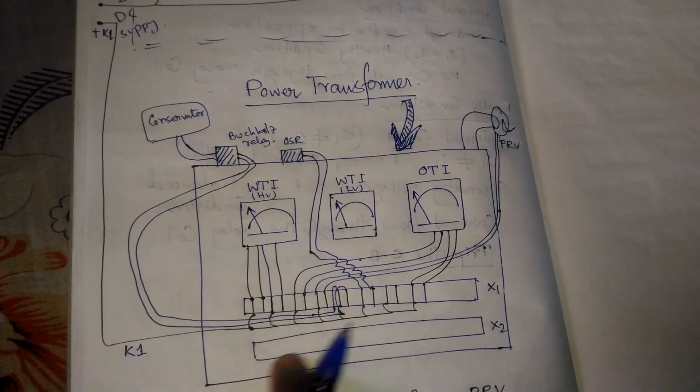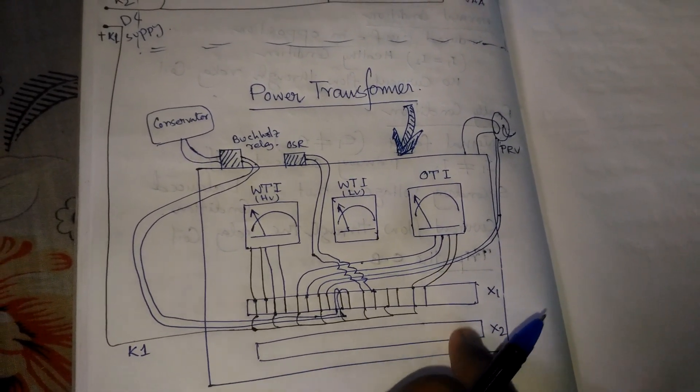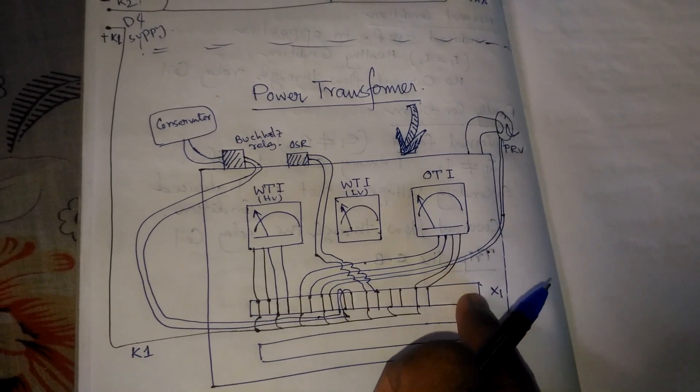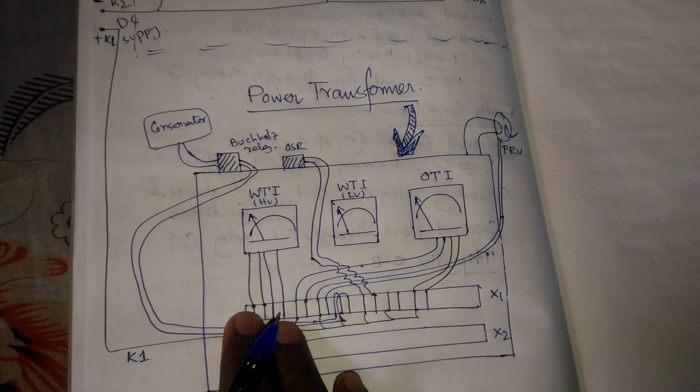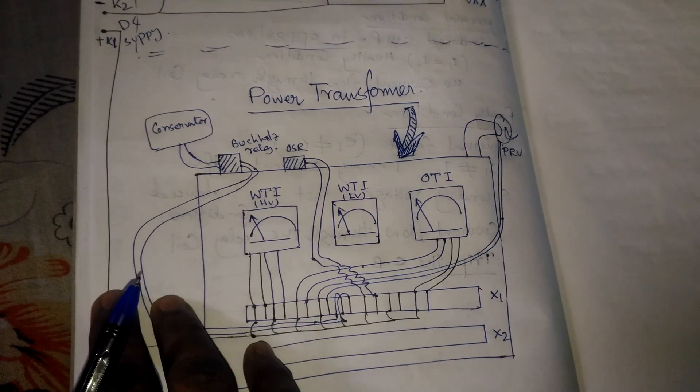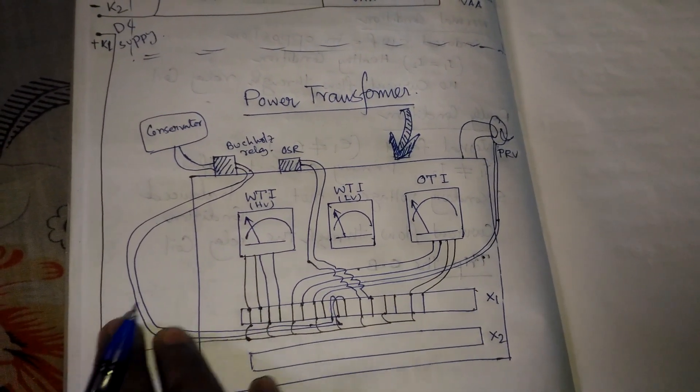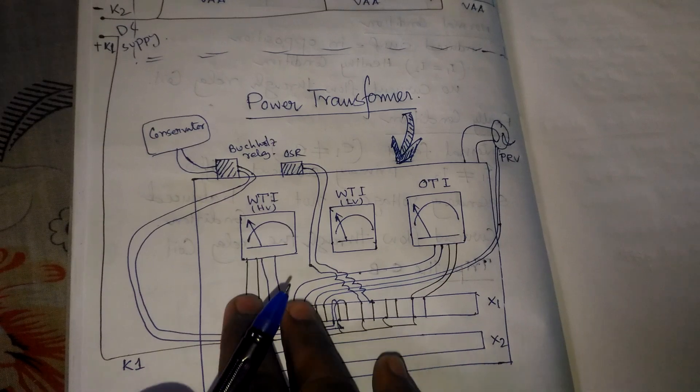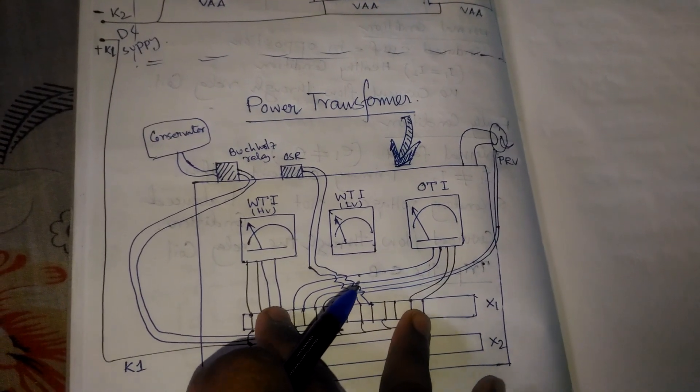X1 TB is very important for getting the three-phase supply, providing the OLTC supply, tap changing supply, and all the protection issues are attached with this TB.